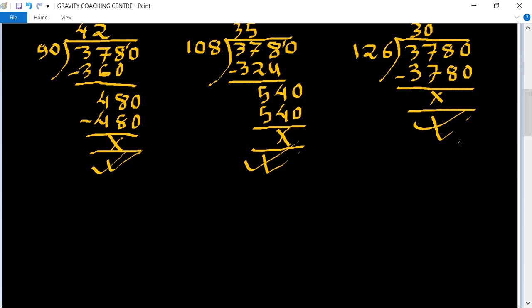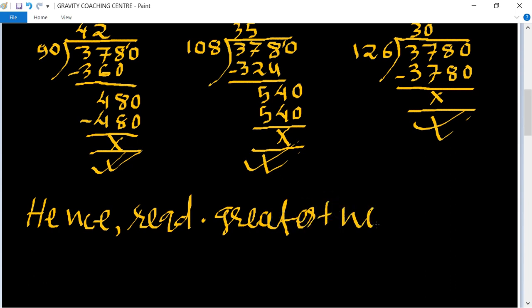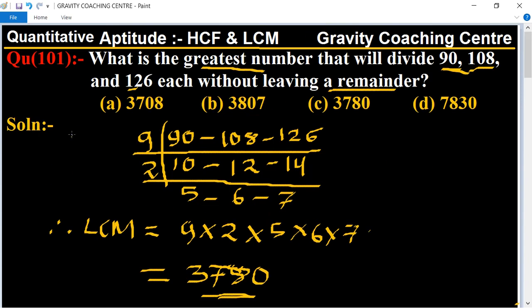equals zero. Therefore, the required greatest number is 3780. Option C is the correct answer.